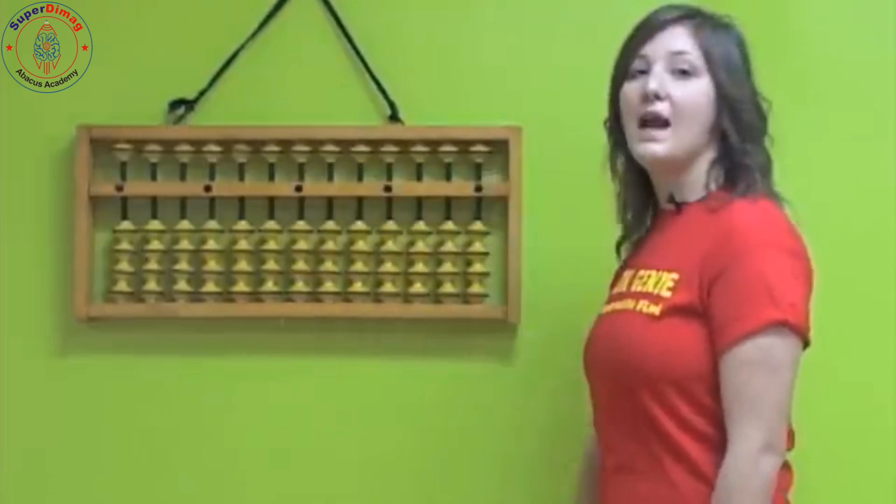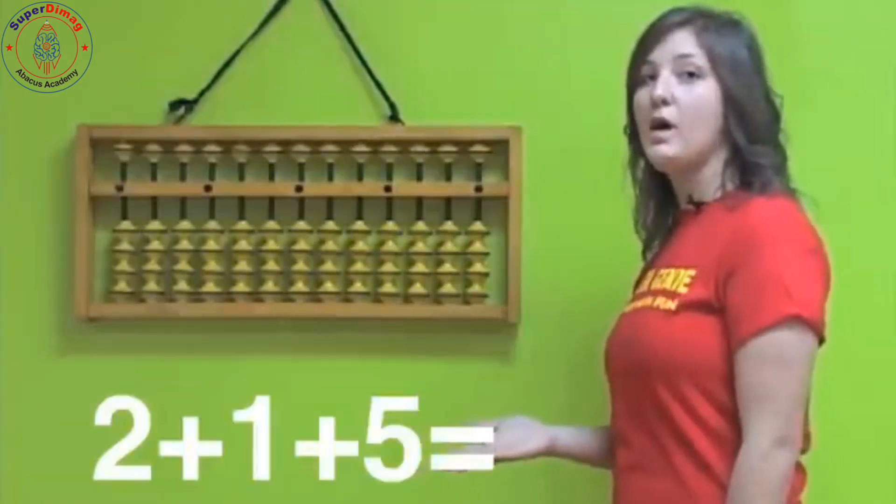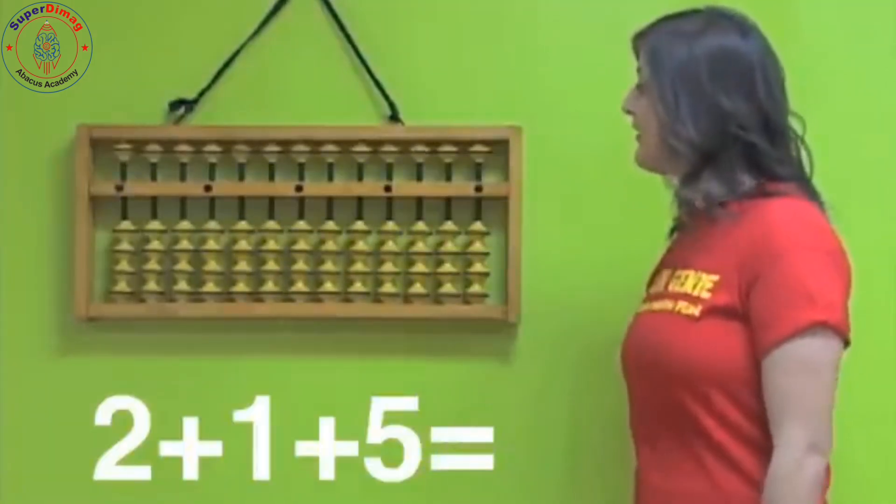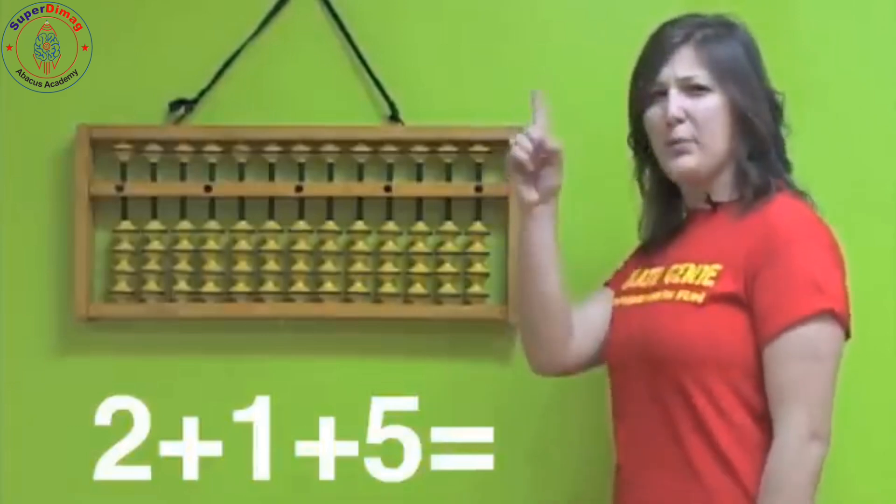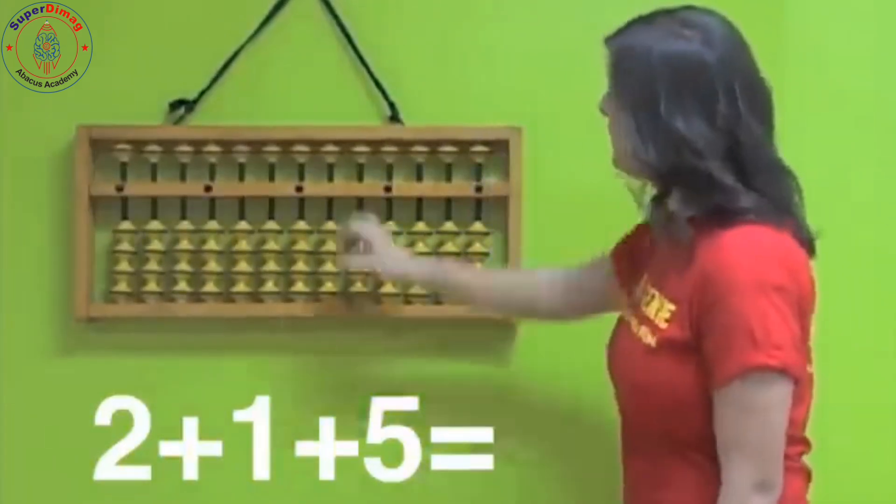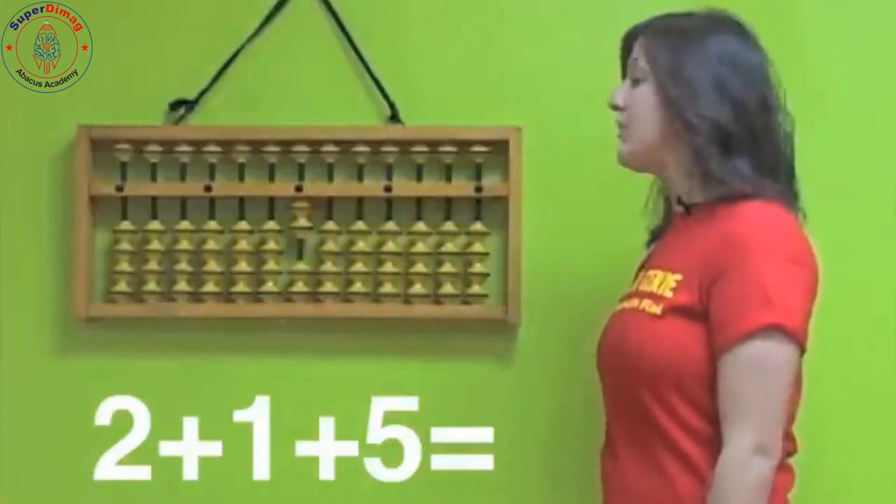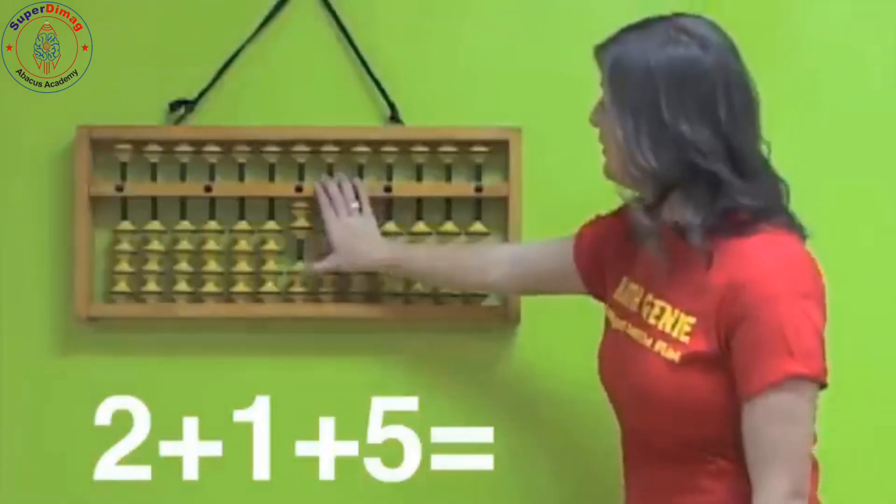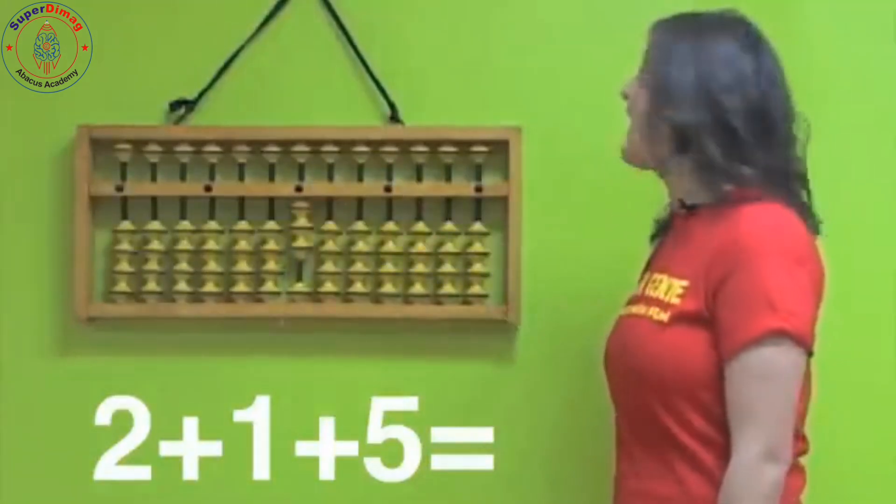Let's try another one. Now we have two, add one, and add five more. Let's add two first. Do I use my pointer or my thumb? Thumbs up. I use my thumb. So I'm going to add two. One, two. Then I'm going to add one more with my thumb and then I'm going to add five.